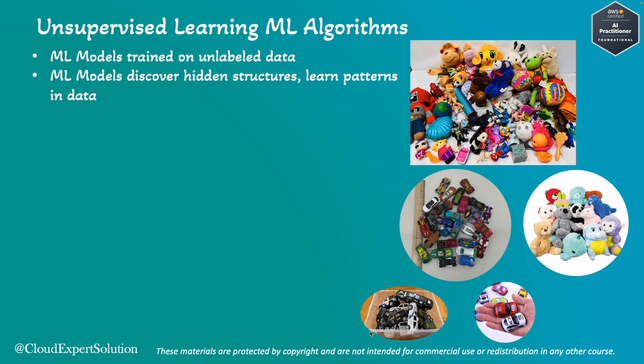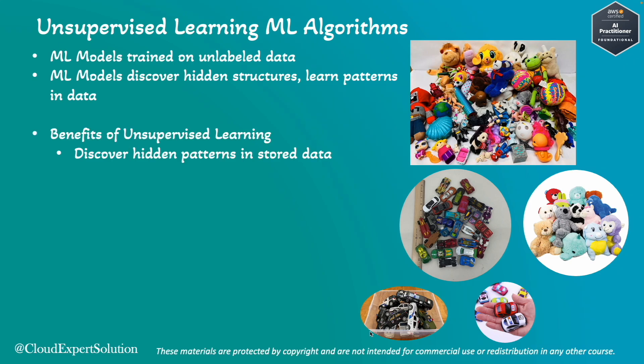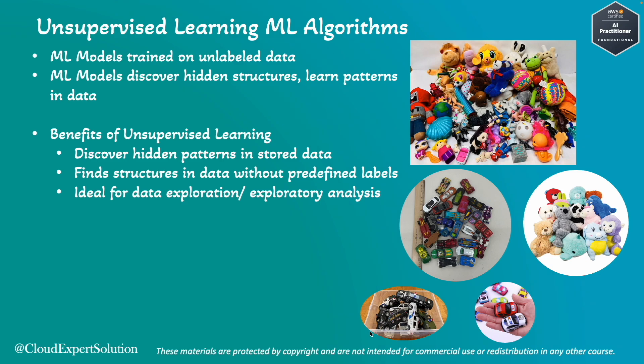Under unsupervised machine learning, the model discovers hidden structures and learns patterns in the data. The benefits include: discovering hidden patterns in stored data — for example, in transactional data from the last 10 or 20 years — finding structure in data without predefined labels, since labeling large volumes of data is not always easy, and it is ideal for data exploration or exploratory data analysis.